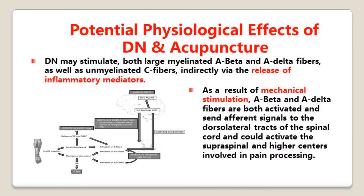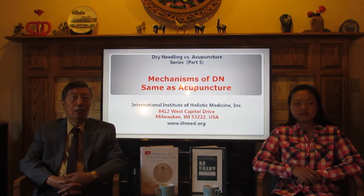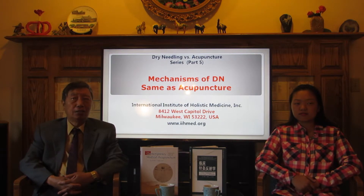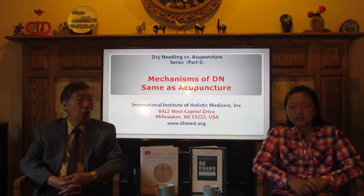As shown in the figure, dry needling may stimulate both large myelinated A-beta and A-delta fibers, as well as unmyelinated C fibers, indirectly via the release of inflammatory mediators. As a result of the mechanical stimulation, A-beta and A-delta fibers are both activated and send afferent signals to the dorsal lateral tracts of the spinal cord, and could activate the spinal and higher centers involved in pain processing. Actually, even the authors of this article admitted that most of their current understanding of the specific physiological effects of dry needling is directly or indirectly derived from acupuncture literature.